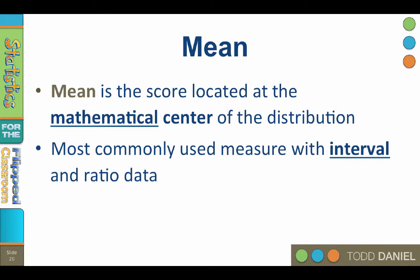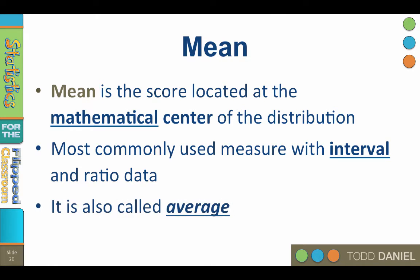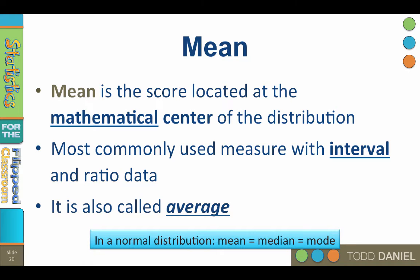The mean is most commonly used with interval and ratio level data, and it is the most likely to be called the average, although the mode or the median could truthfully be called an average. When the scores in the data set form a normal distribution, the mean equals the median equals the mode.